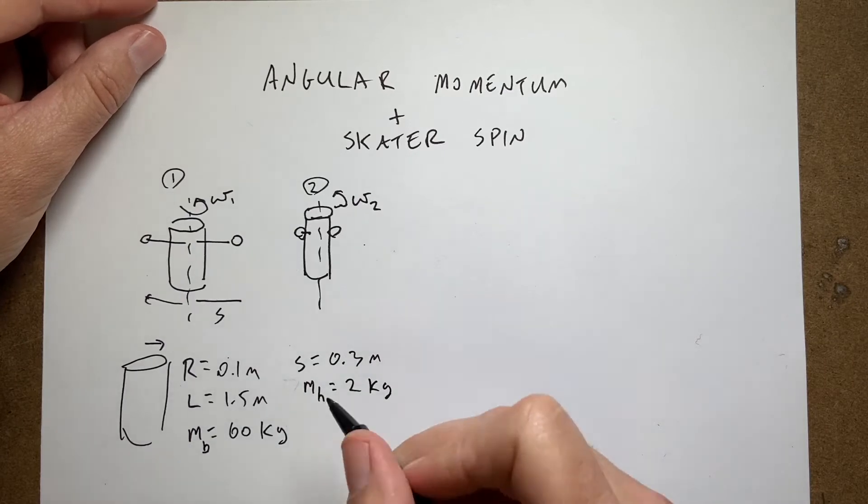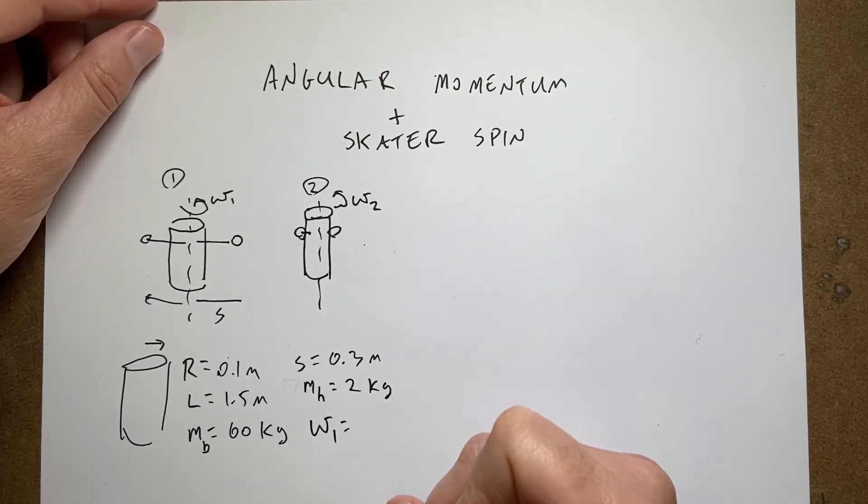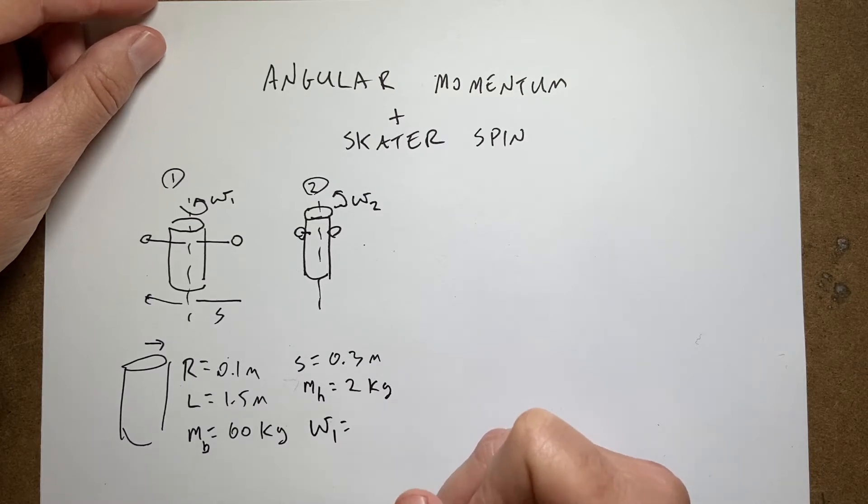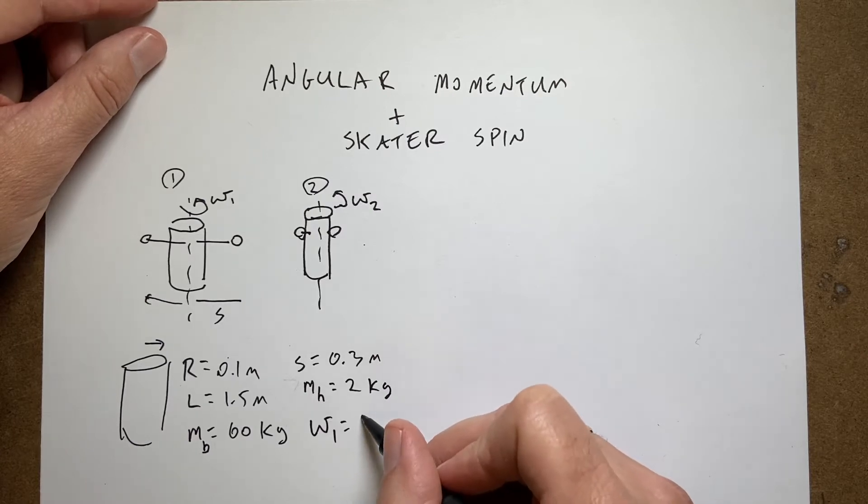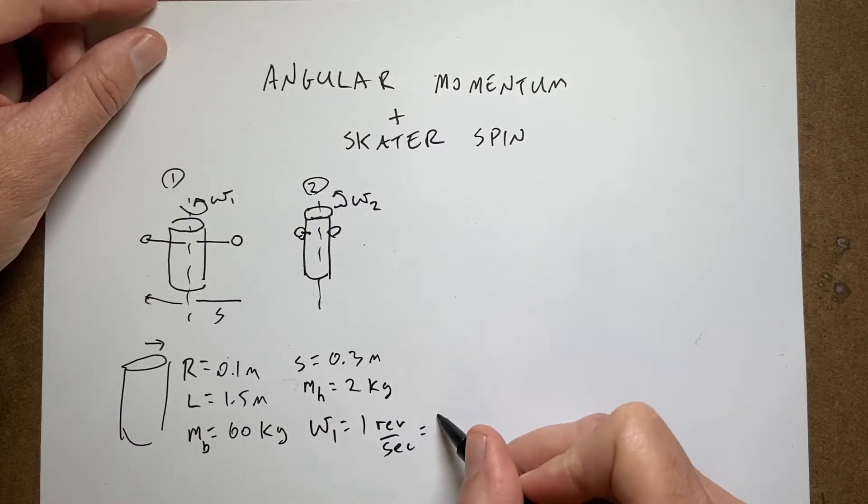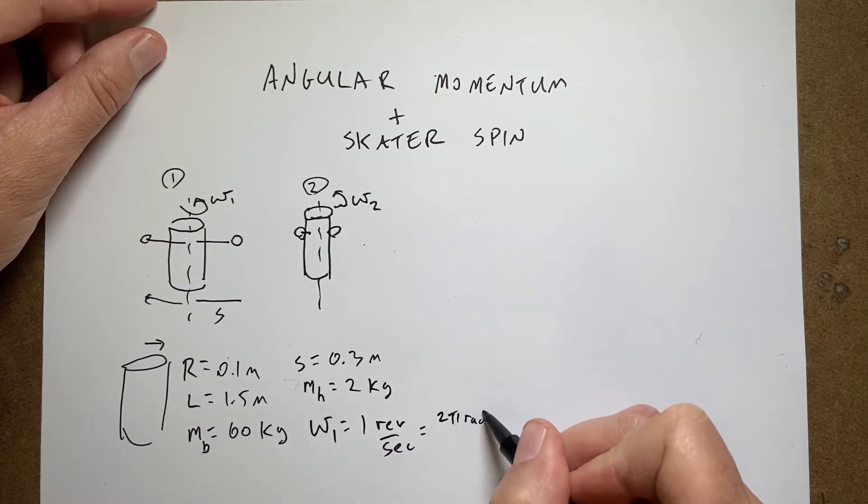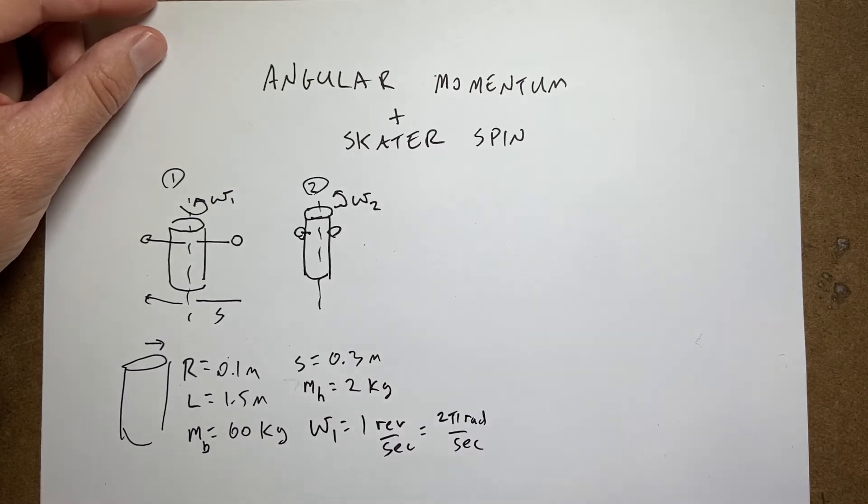Okay, I need one more thing: the initial angular velocity. Let's say they're spinning at one revolution per second, and that's 2π radians per second. I just picked that.